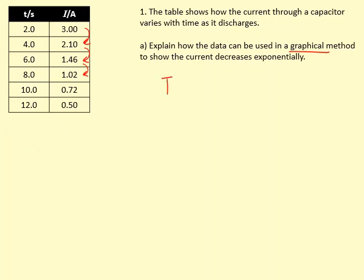So what we do is we need to look at the function for the current itself, which should be I = I₀e^(-t/RC). Now if we take logs of both sides, we get ln(I) = ln(I₀e^(-t/RC)), and we're going to simplify.